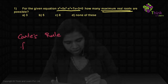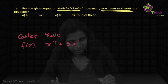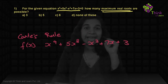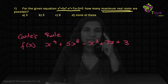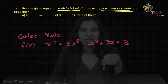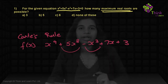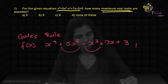What does Descartes' rule tell us? In f(x), which is given as x⁹ + 5x⁸ − x³ + 7x + 3, the maximum number of positive real roots is the number of sign changes in f(x). Checking sign changes here, we have two sign changes, which means a maximum of two positive roots.